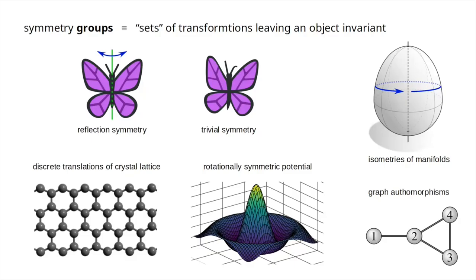What is a symmetry group? You can think of it as the set of transformations that leave some object invariant. For instance, this butterfly on the top left is invariant under reflections, so reflections form a symmetry group. The other butterfly on the right is asymmetric, so it has a trivial symmetry group.